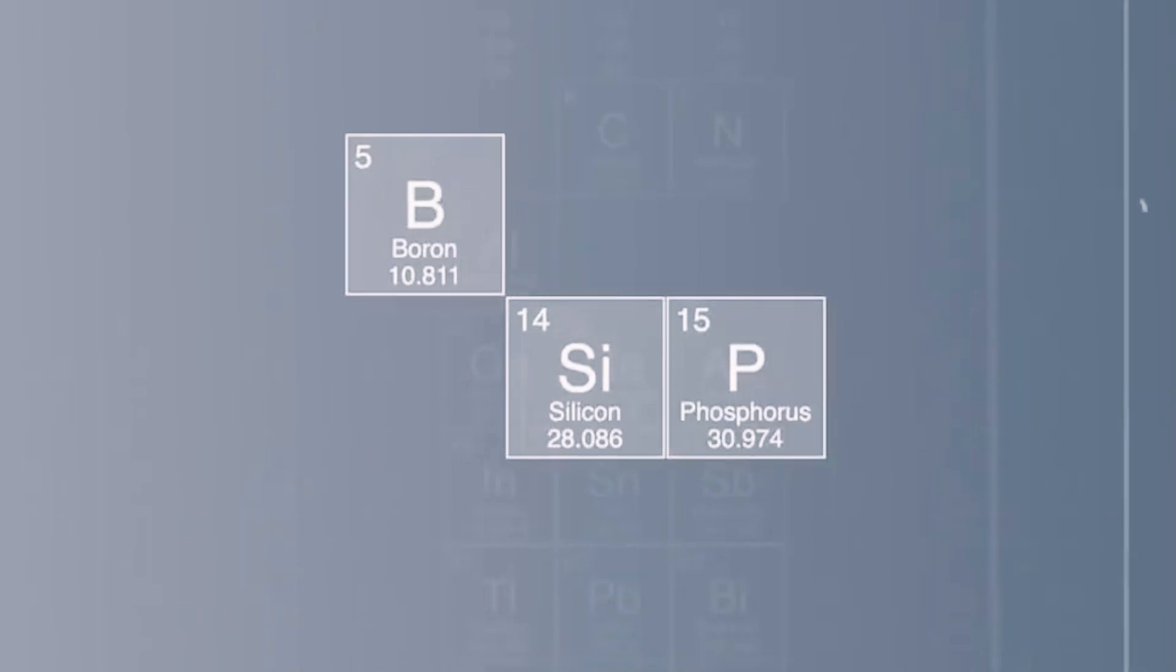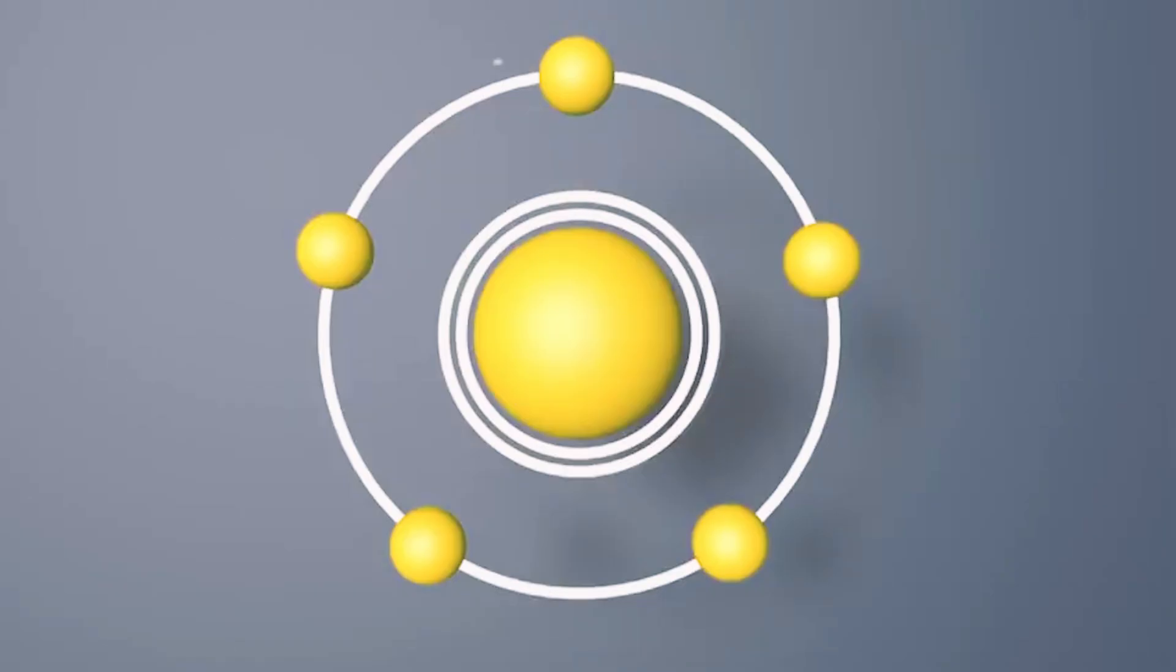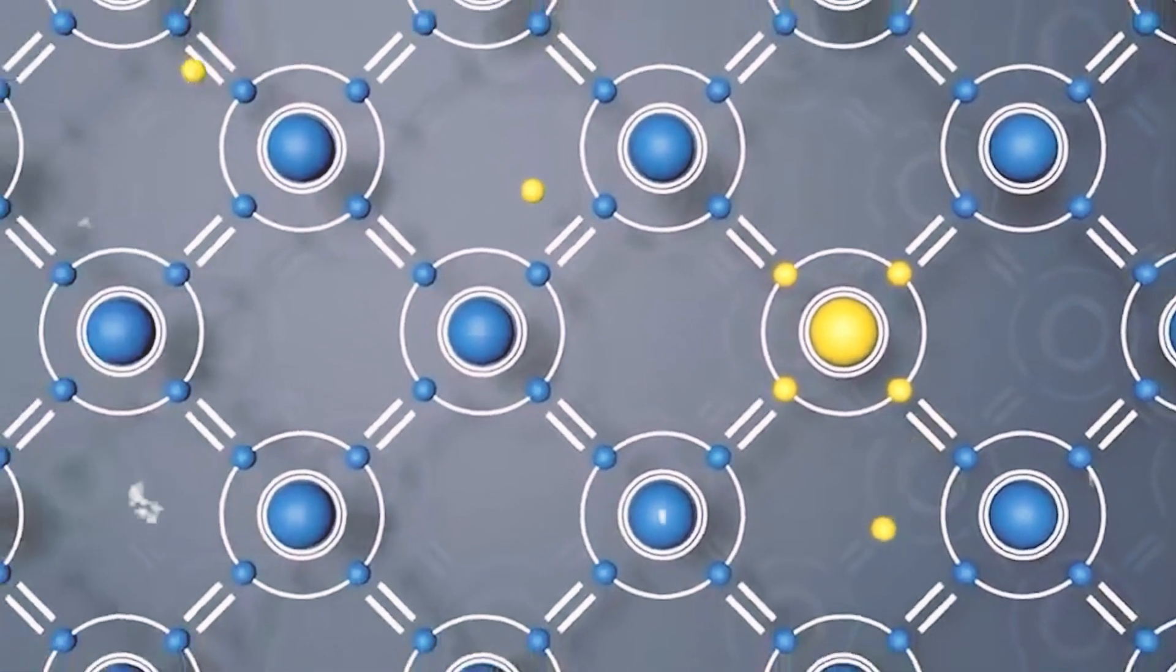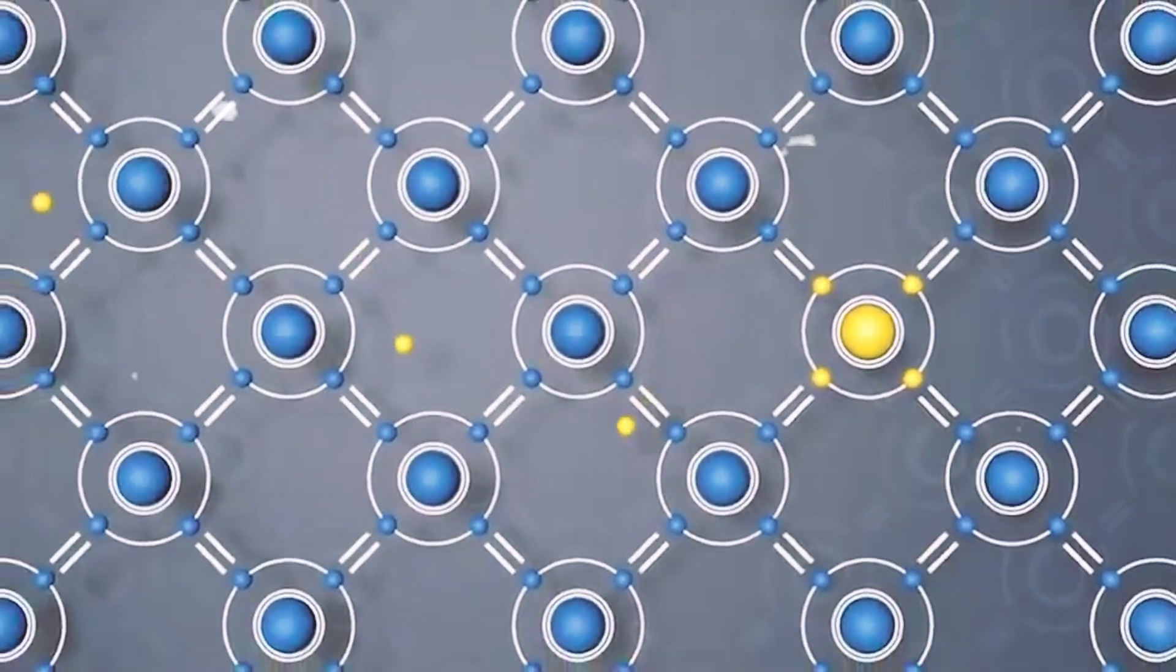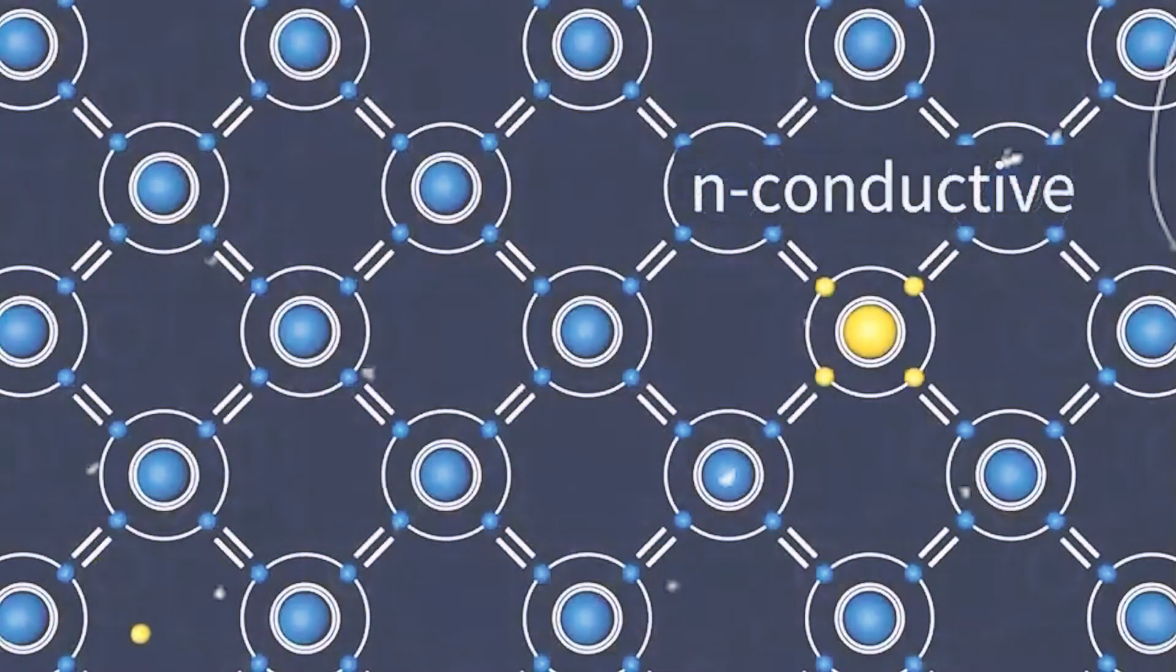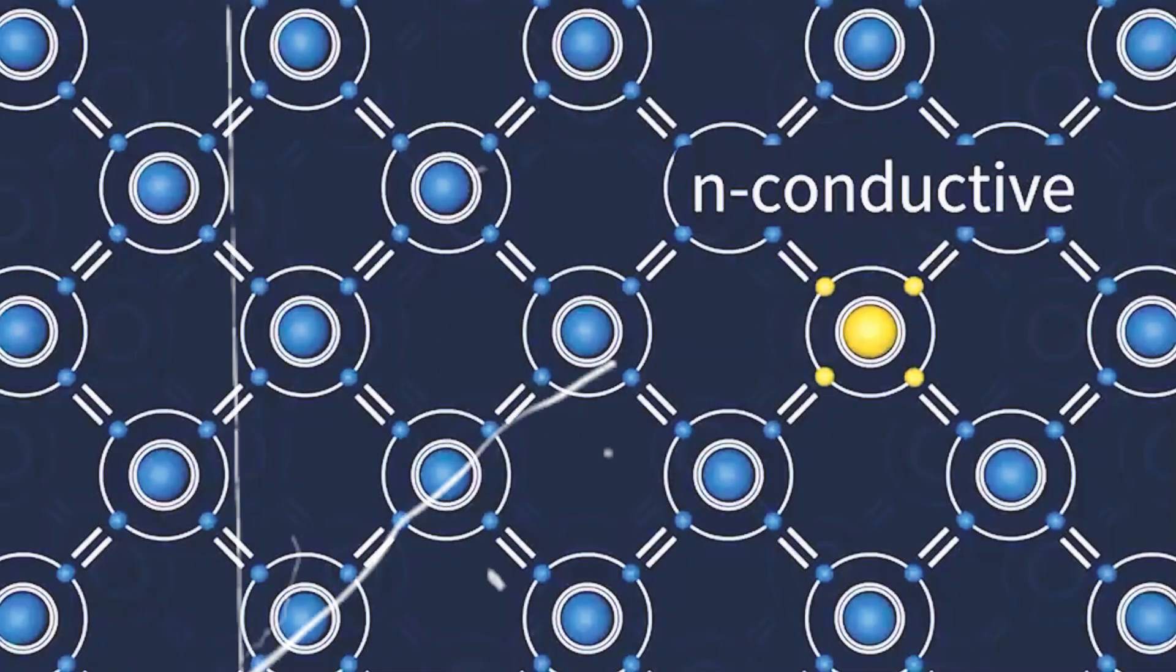Another prominent player in China's semiconductor industry is Huawei, the telecommunications giant. Despite facing U.S. sanctions, Huawei has managed to develop its 7nm microchips, defying expectations and showcasing China's technological resilience.